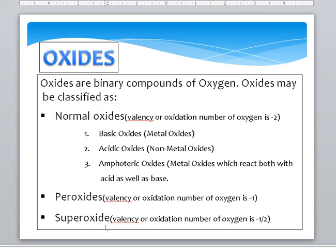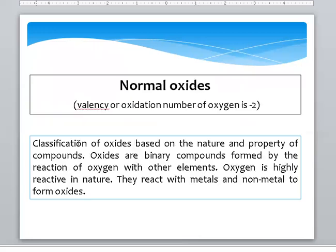Super Oxide has more Oxygen than Peroxide and Normal Oxide, and the valency or oxidation number of Oxygen is minus one half. By comparison, in a Normal Oxide the valency or oxidation number of Oxygen is minus 2.